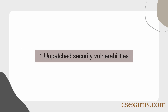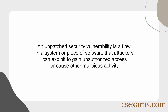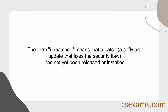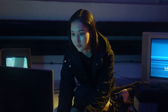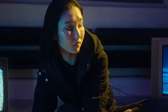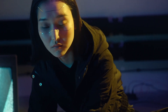Number 1: Unpatched security vulnerabilities. An unpatched security vulnerability is a flaw in a system or piece of software that attackers can exploit to gain unauthorized access or cause other malicious activity. The term 'unpatched' means that a patch — a software update that fixes the security flaw — has not yet been released or installed. One of the most well-known malware that took advantage of an unpatched security flaw is WannaCry.